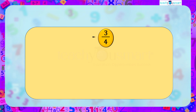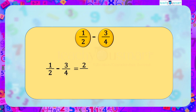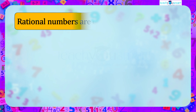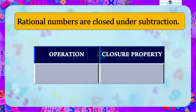On subtracting 3/4 from 1/2: LCM of 2 and 4 equals 4. So 1/2 − 3/4 = 2/4 − 3/4 = (2 − 3)/4 = −1/4, which is also a rational number — that is, rational numbers are closed under subtraction.